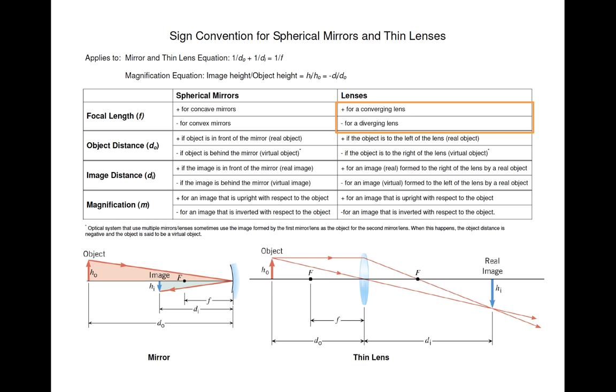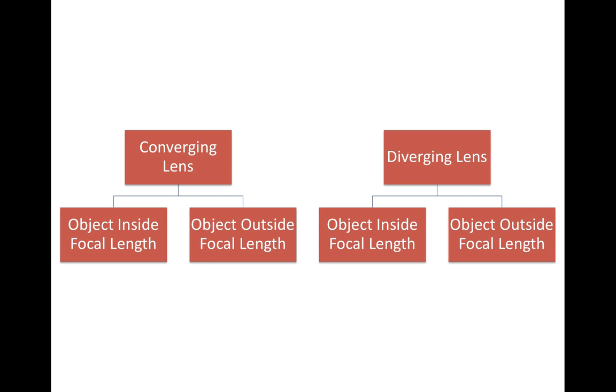So let's explore these in greater detail because all of the problems that you're going to do that involve only one lens will fall into four categories. You can have a converging or a diverging lens, and then your object can either be inside the focal length of that lens or outside the focal length of that lens. In other words, it can be really close to a lens or really far away from the lens.